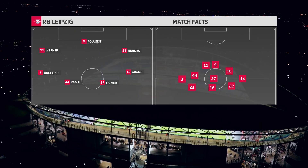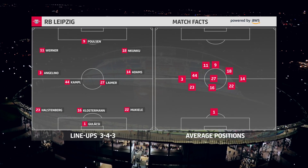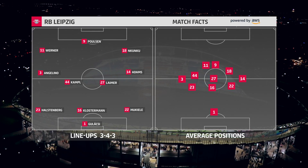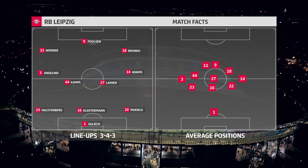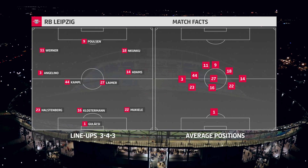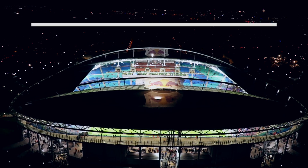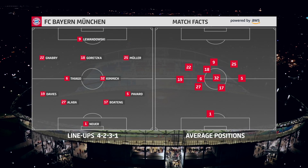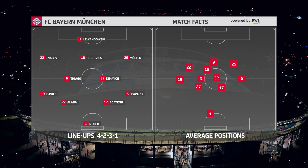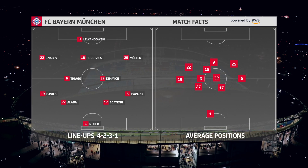Let's look at the lineups. Compared to the starting lineup, the average positions show Leipzig are very compact and concentrate on the center. It looks a similar situation with the Bayern players, but on average they're set up in a slightly more attacking formation and further apart.